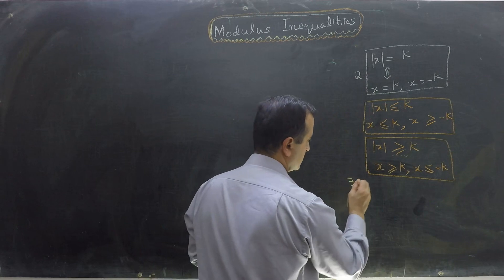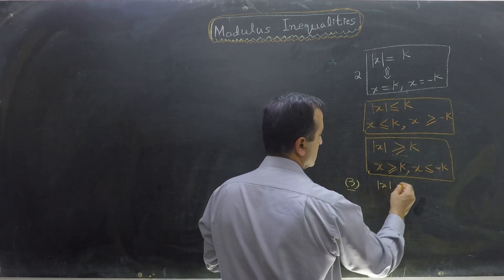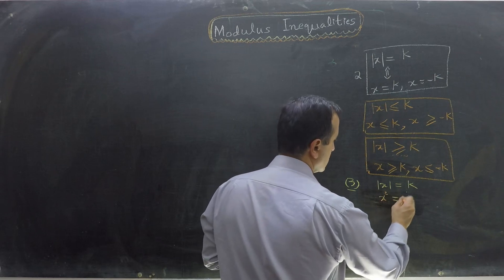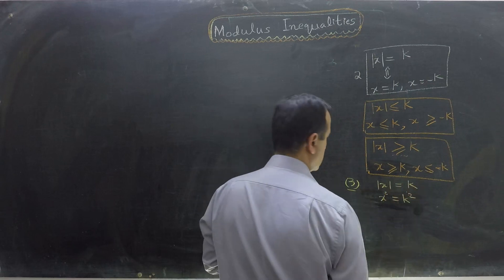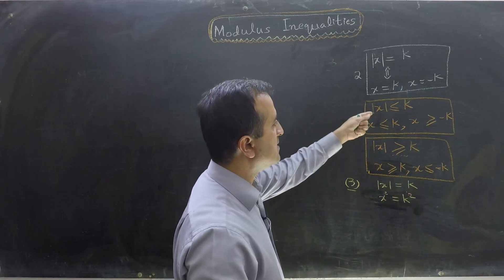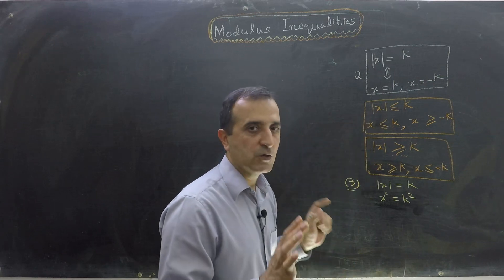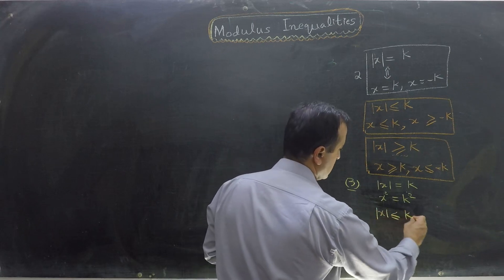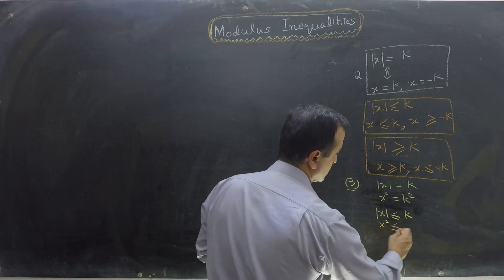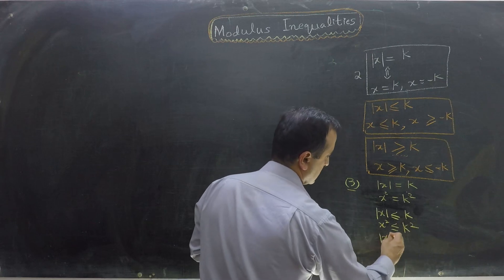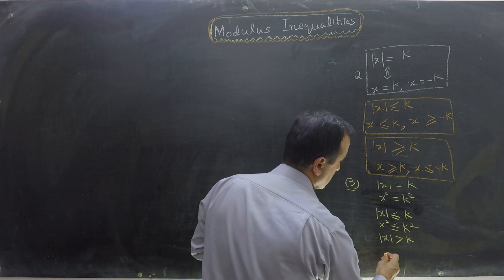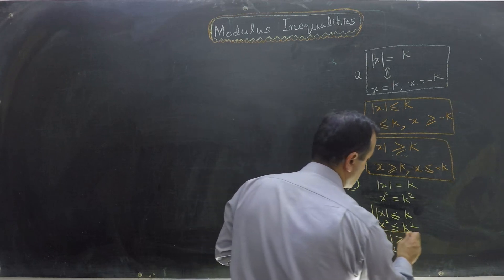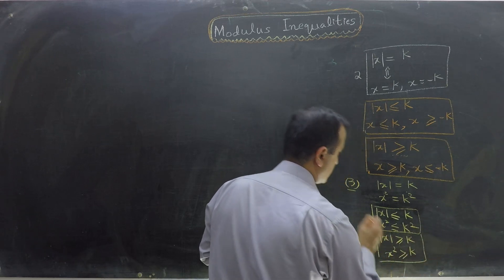Our rule number 3 was that if mod of x equals k and k is a positive number, then x squared equals k squared. Similarly, we can extend it for inequalities, as long as k is positive. If mod of x is less than or equal to k, then x squared is less than or equal to k squared. If mod of x is greater than or equal to k, then x squared is greater than or equal to k squared. This is our rule number 3.